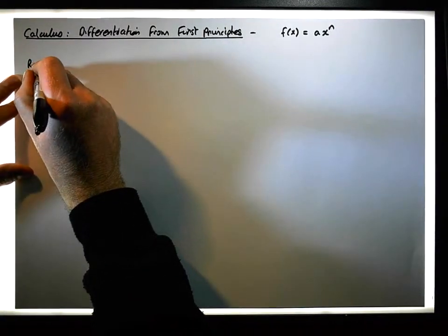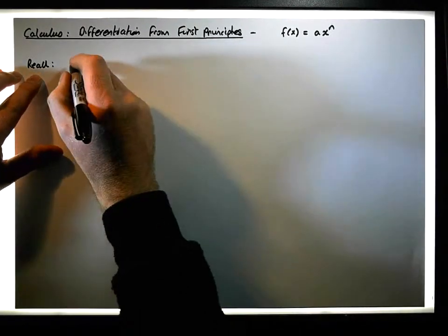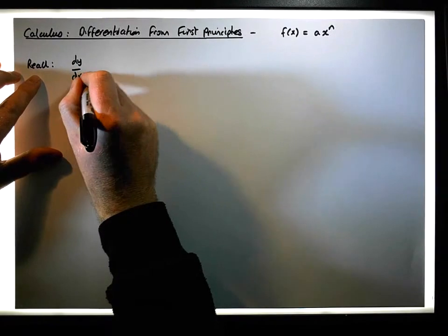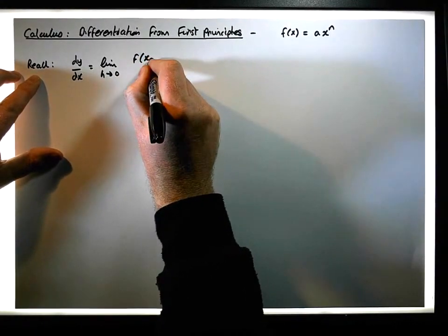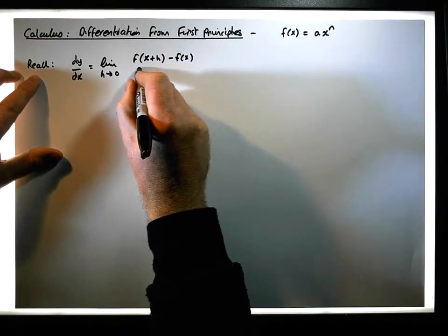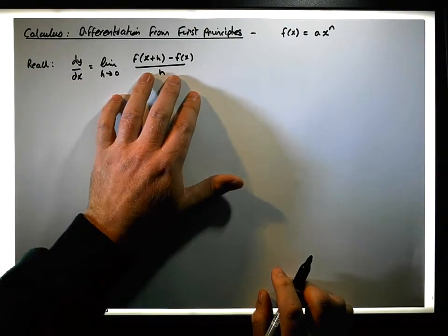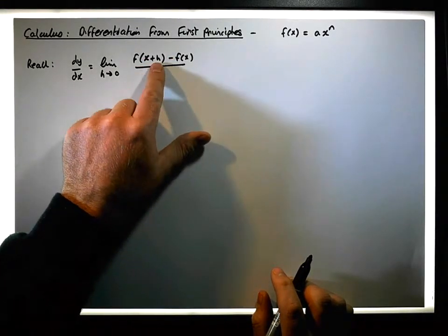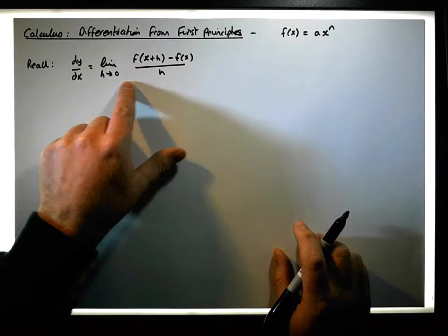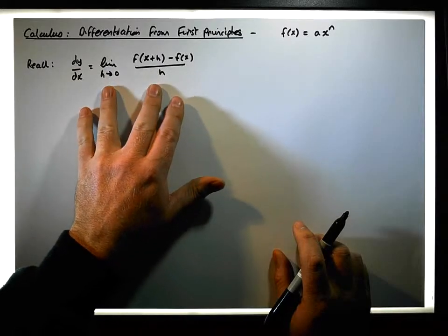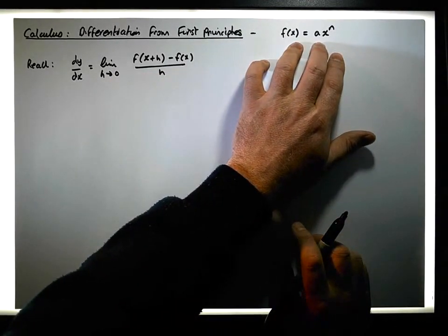Let's recall that the derivative of a function from first principles, dy/dx — the derivative of y with respect to x — is equal to the limit as h tends to zero of f(x+h) minus f(x), all over h. By definition, this derivative represents the gradient at any particular point as h tends to zero. This small infinitesimal change with respect to the x-axis gets smaller and smaller and actually tends to zero. In a previous video we've defined and derived where this formula comes from, but what we want to do is apply it to this particular function — which is what's known as differentiation from first principles.